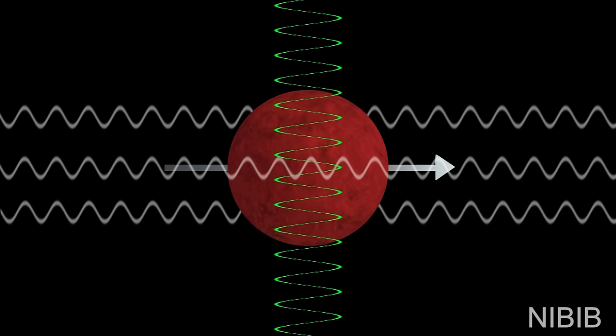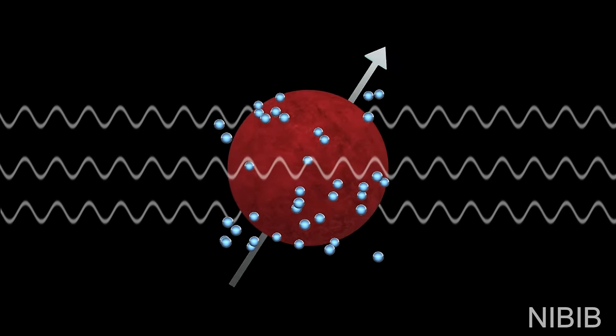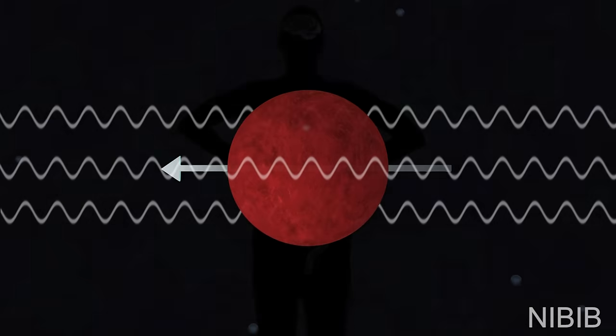Since the radio frequency pulse pushes the proton against its nature, once this pulse is turned off, the protons realign with that magnetic field, releasing electromagnetic energy along the way.